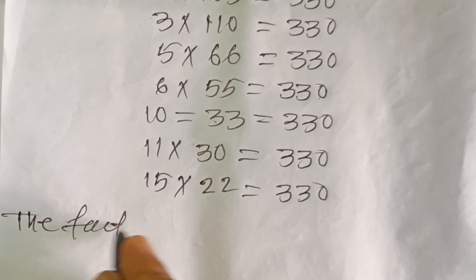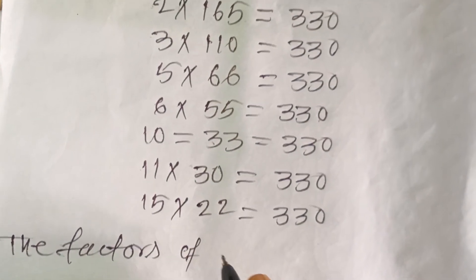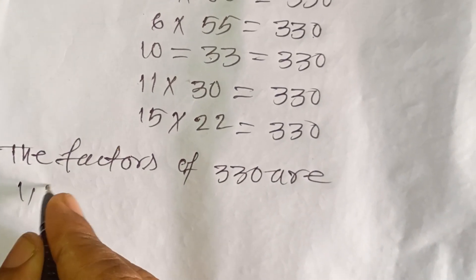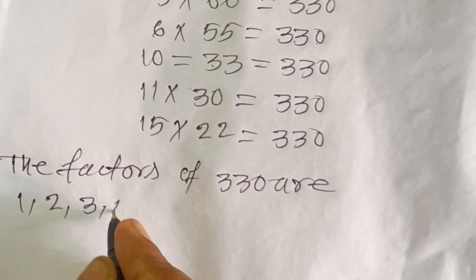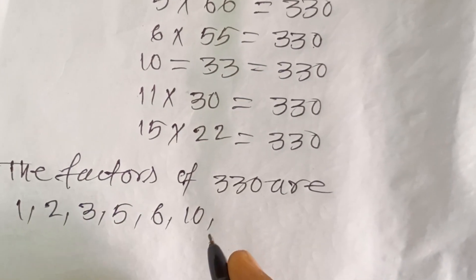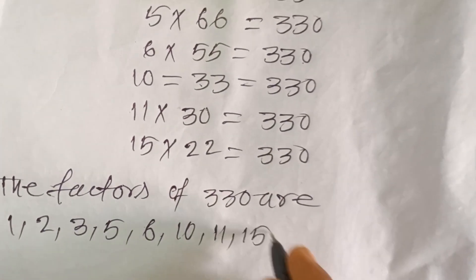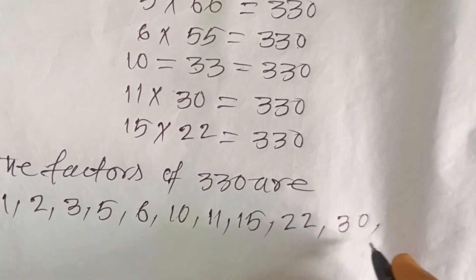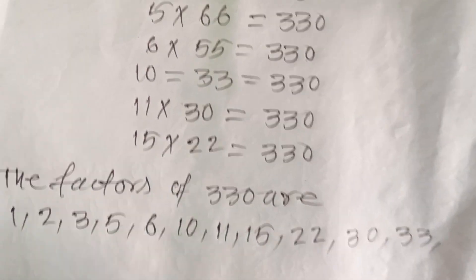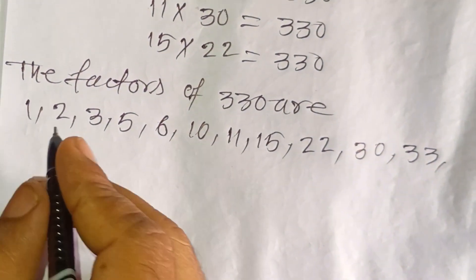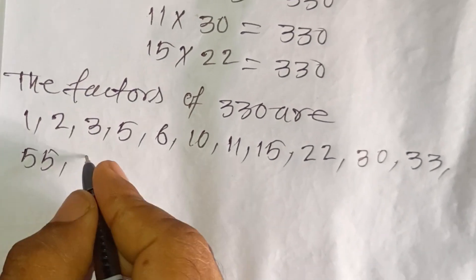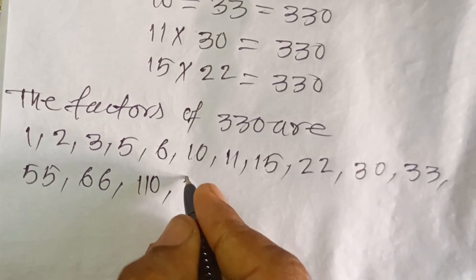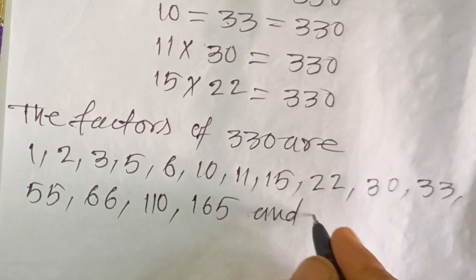The factors of 330 are 1, 2, 3, 5, 6, 10, 11, 15, 22, 30, 33, 55, 66, 110, 165, and 330.